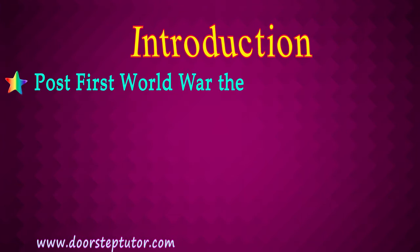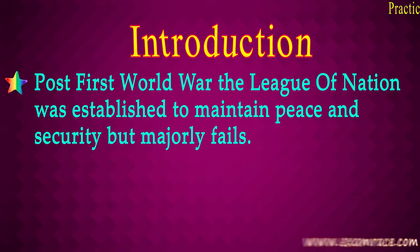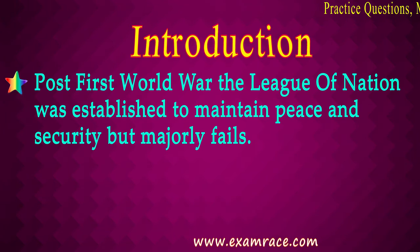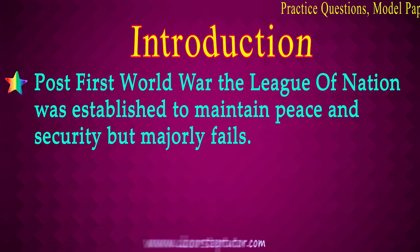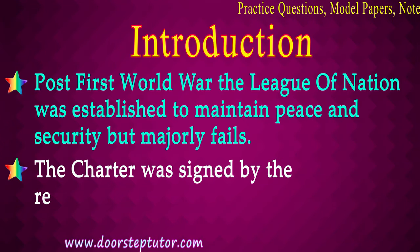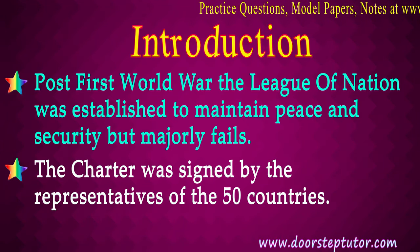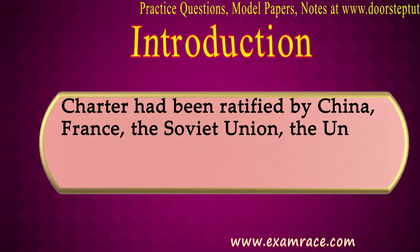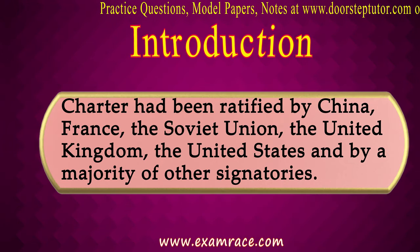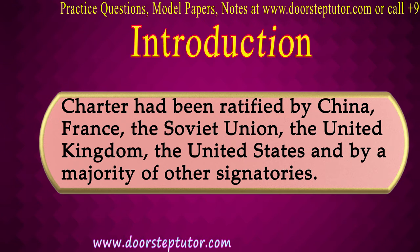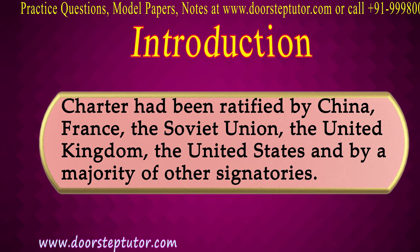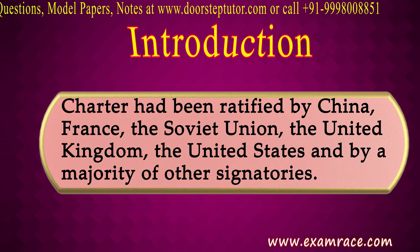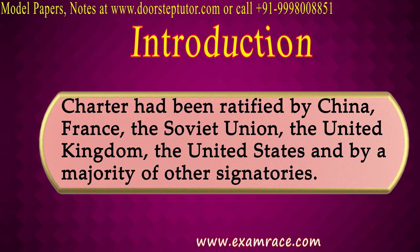Post the First World War, the League of Nations was established to maintain peace and security, but it majorly failed, hence the Second World War took place. The Charter was then signed by representatives of 50 countries, first ratified by China, France, the Soviet Union, the United Kingdom, and the United States — the Allied powers — along with other majority signatories, making them the permanent members of the United Nations organization.